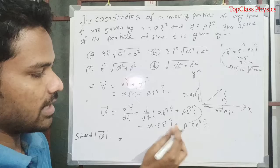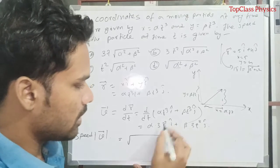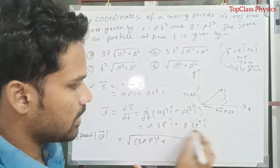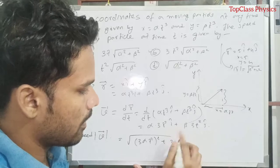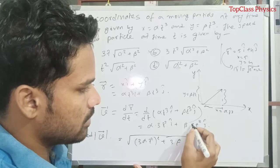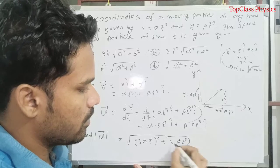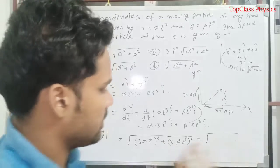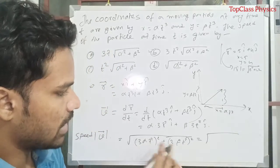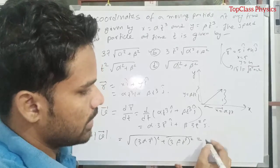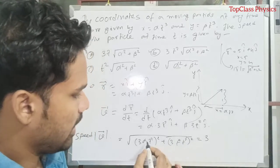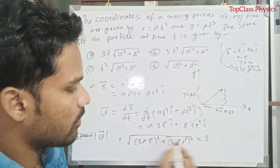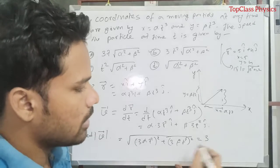Something i cap plus something j cap, that means root over something square. That's 3 alpha T square whole square plus 3 beta T square whole square. So this is our speed. If we calculate it, you can see 3 square means 9, so if I take common that is 3 square T square, it is T square whole square that is T to the power 4. If I take common that outside of the root, that is T square.